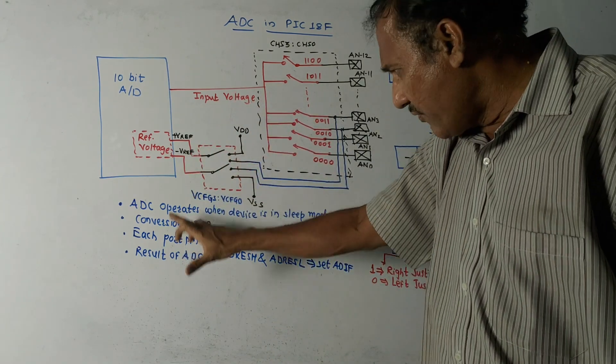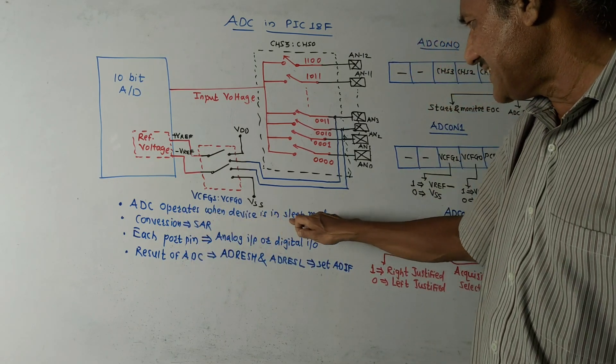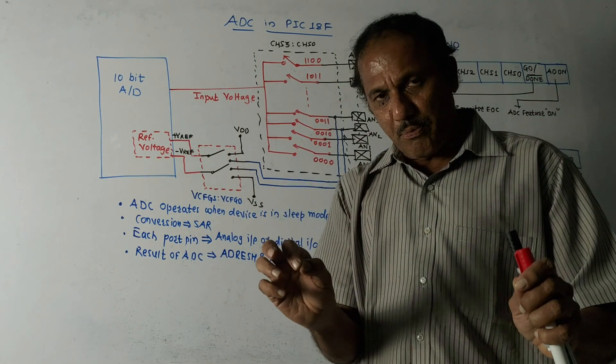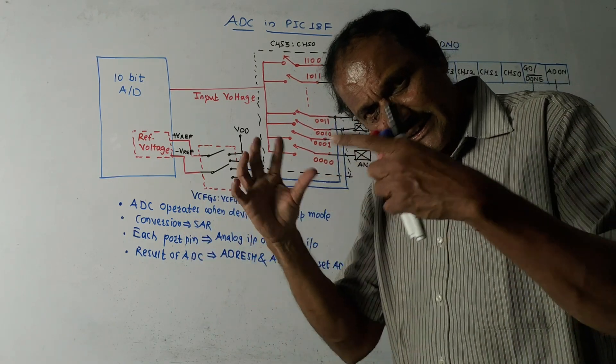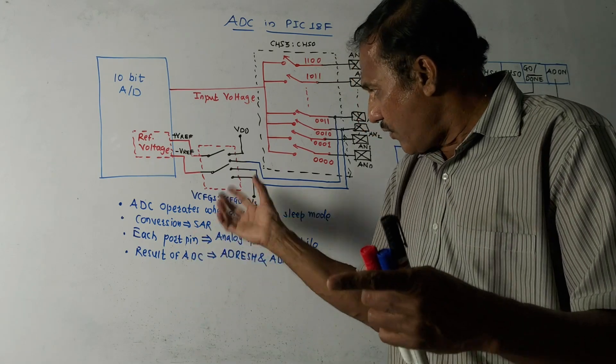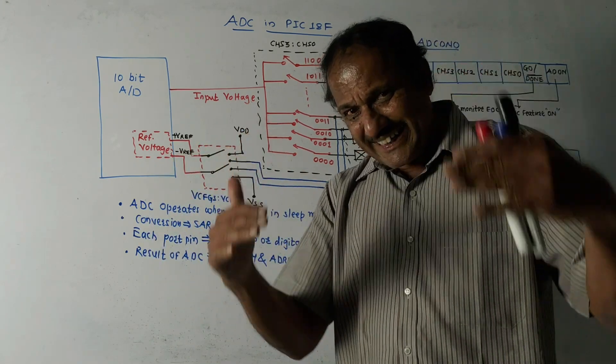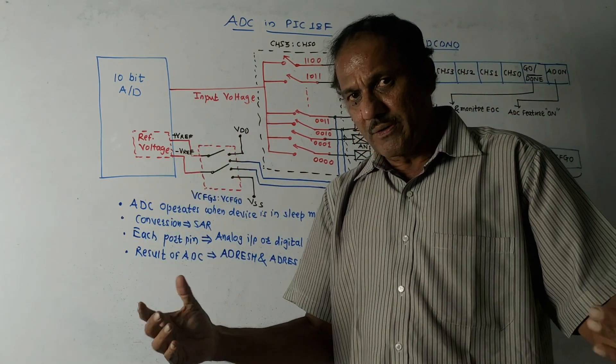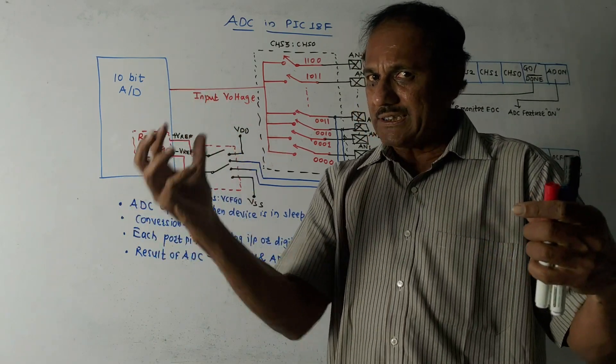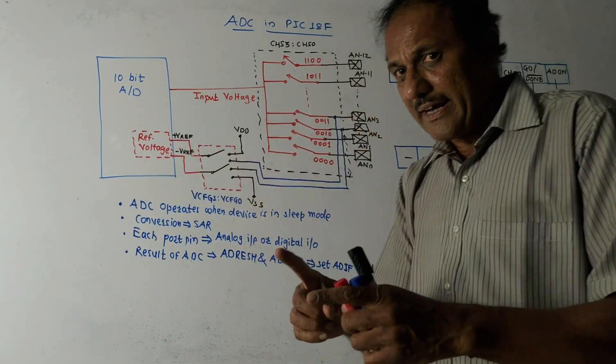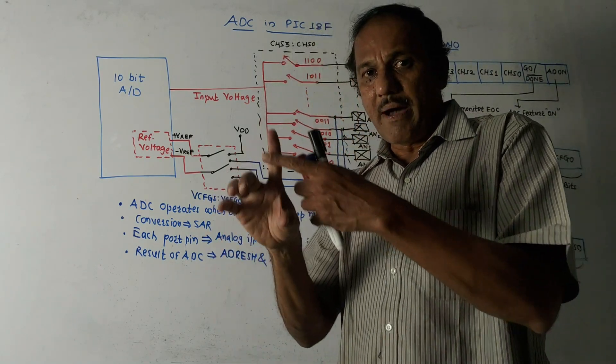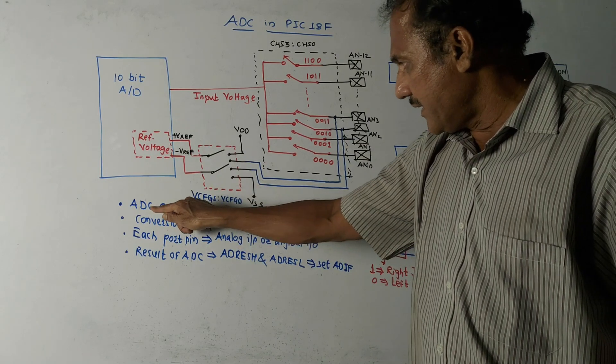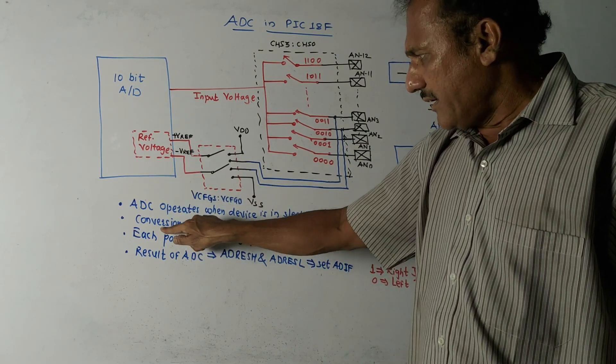Now I have written a few points. ADC operates when device is in sleep mode. This is very important characteristic of the ADC. Even if the device is in sleep mode, ADC will operate. But in that case, since the device is in sleep mode, it cannot take the clock signal from the device, but it makes use of the clock signal which is internally generated by RC oscillator in the ADC.